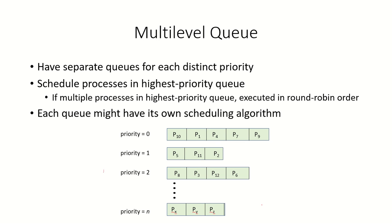In the priority scheduling algorithm, all processes are kept in one ready queue even though they might have different priorities. The multi-level queue scheduling algorithm has separate ready queues for processes with different priorities. So we may have Q0 for processes at the highest priority level — assuming a lower integer represents a higher priority. Processes like P10, P1, P4, P7, and P9 are the highest priority and are kept in the Q0 ready queue.